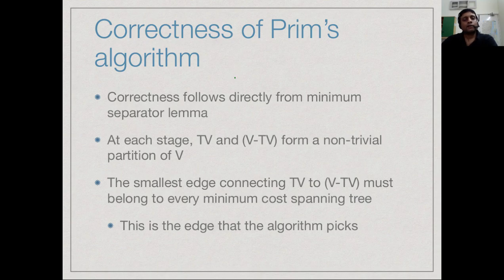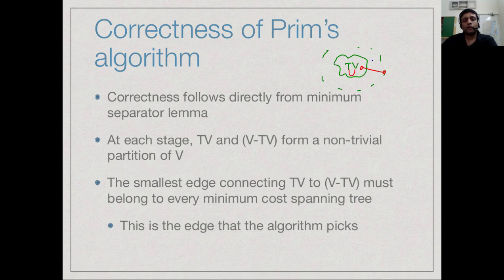Once we have this lemma, the correctness of Prim's algorithm is clear. At every stage, the set of tree vertices forms U and everything outside forms W. Prim's algorithm picks the smallest weight edge connecting U to W. By the Minimum Separator Lemma, this edge must lie in every minimum cost spanning tree — so the edge Prim's algorithm picks is exactly what the lemma forces us to pick. Therefore Prim's algorithm is definitely correct.